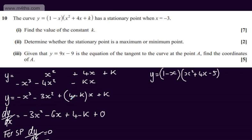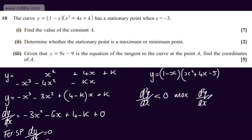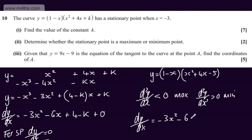In the second part, for two marks, we need to determine whether the stationary point is a maximum or minimum point. Let's consider the second derivative. d²y by dx² less than 0 indicates a maximum; d²y by dx² greater than 0 indicates a minimum. So I'm going to take my expression for dy by dx with the value of k and differentiate once again. dy by dx equals minus 3x squared minus 6x, and then 4 minus k.